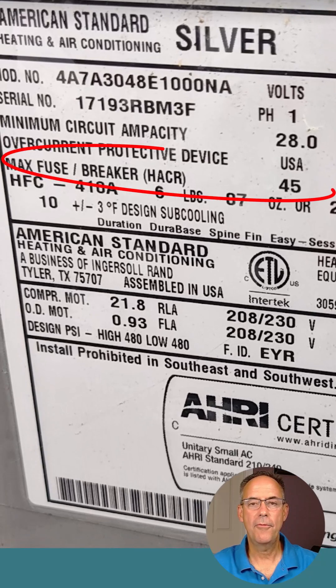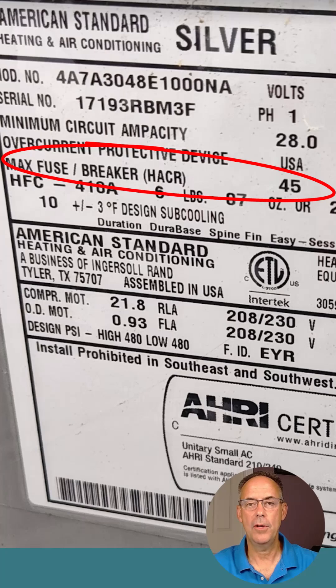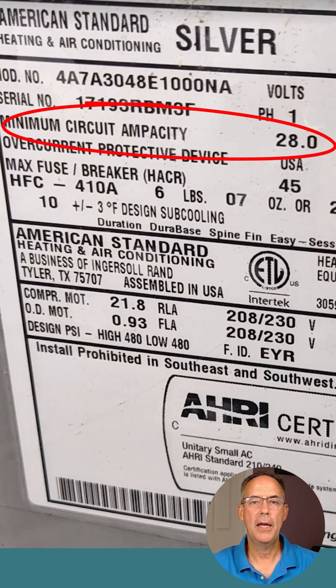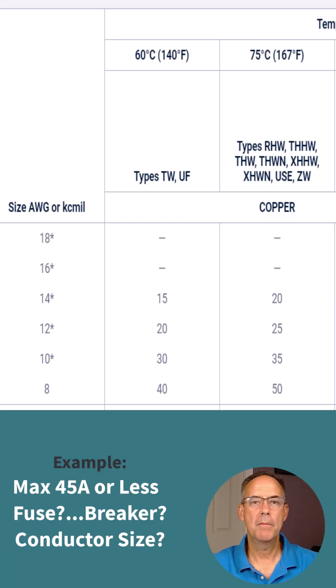On this next tag it tells us maximum fuse/breaker — so you can use either — and it tells us it's 45 amps. Note that you can put in less than 45 if you want to and it meets the manufacturer's requirements; it just can't be more than 45. The minimum circuit ampacity on this unit is 28 amps, so let's go over to Table 310.16 to find the appropriate wire size.